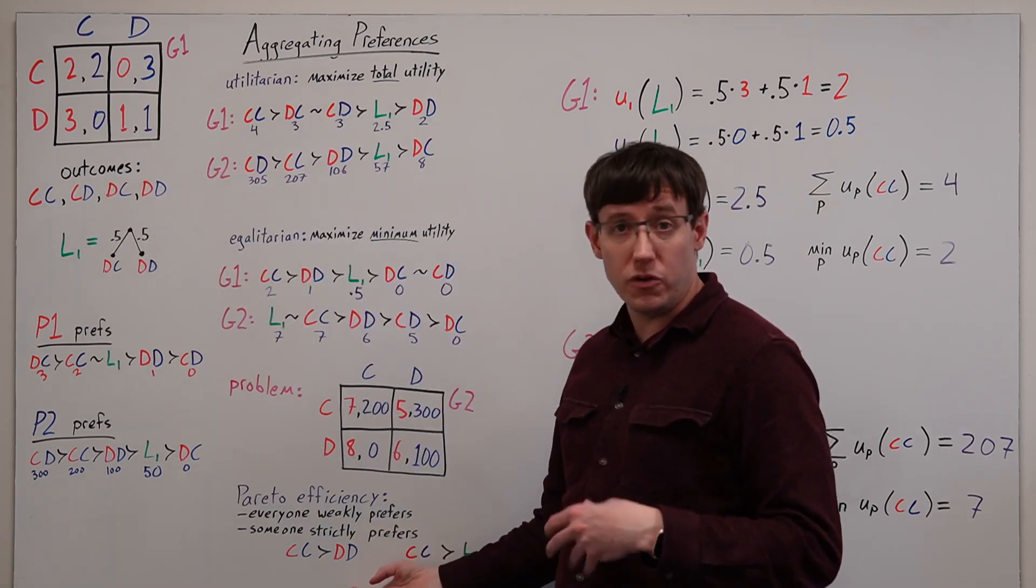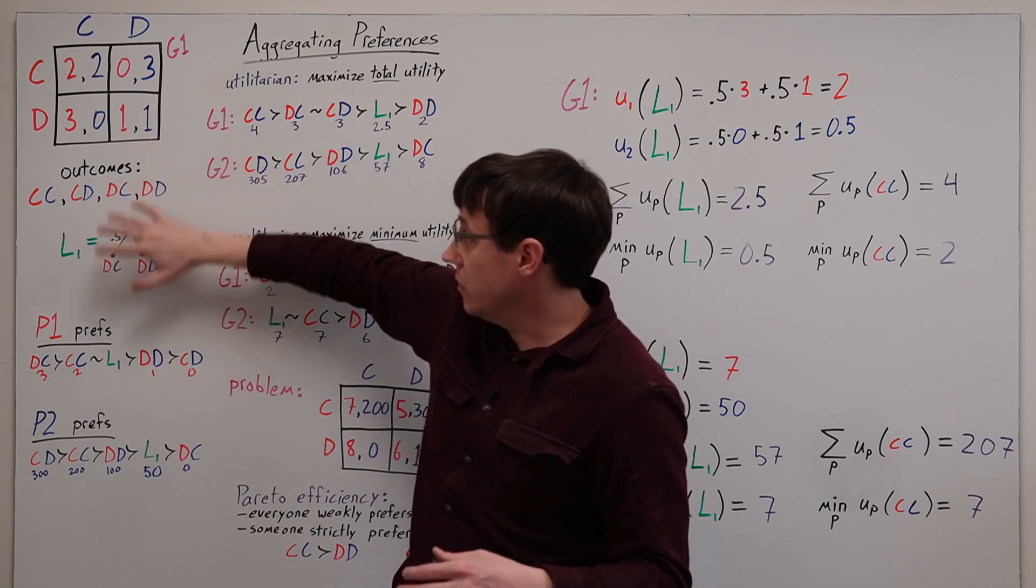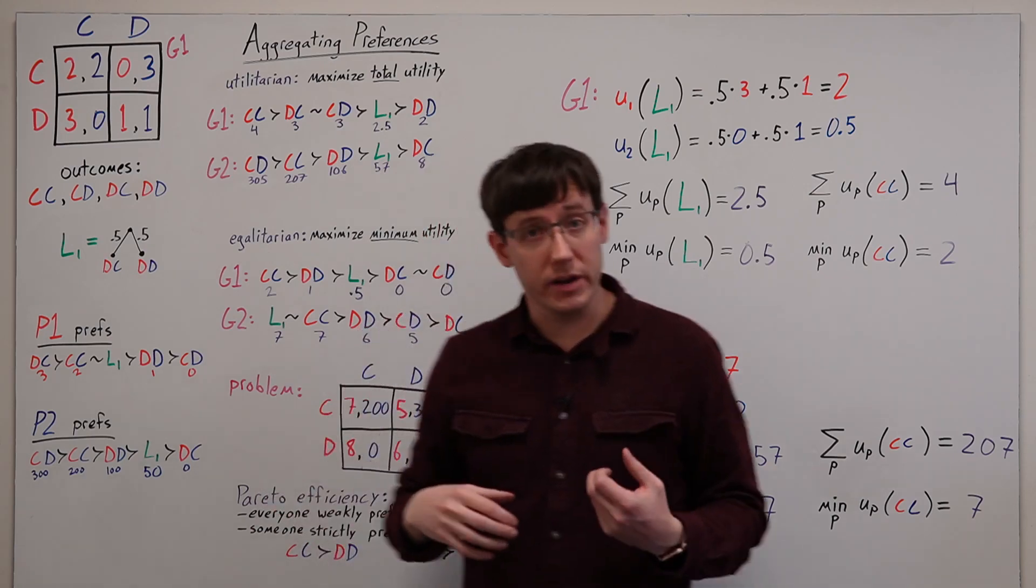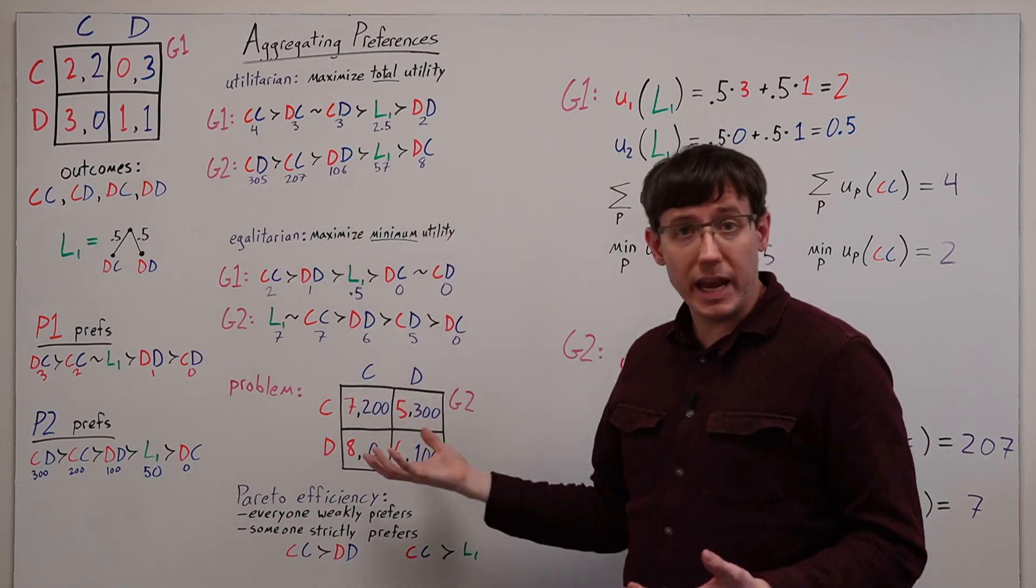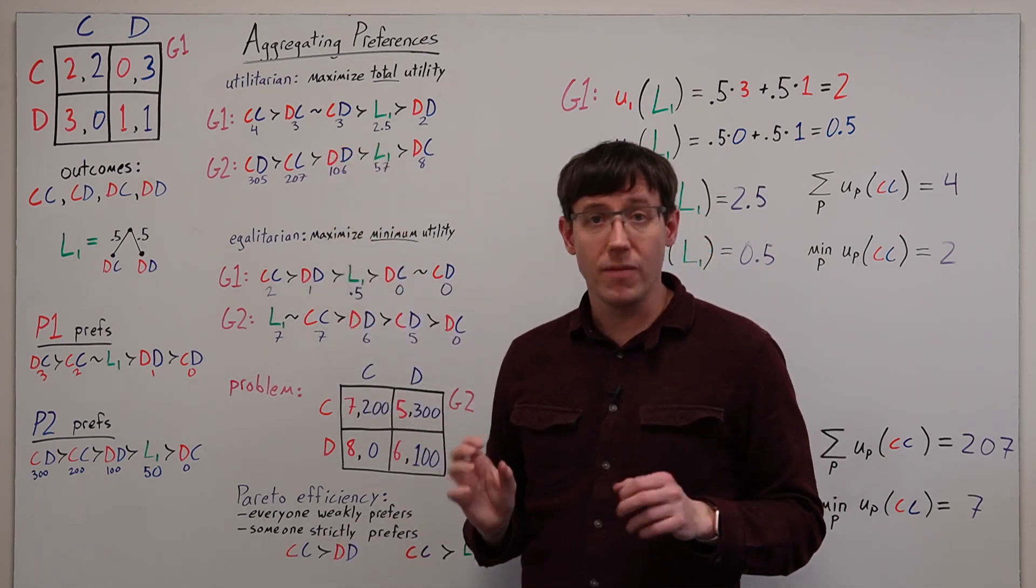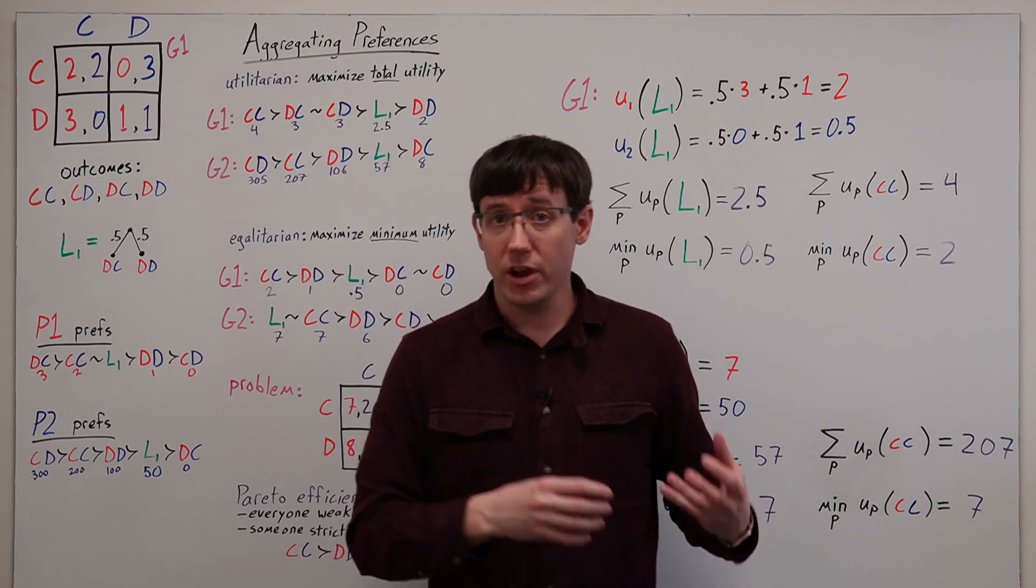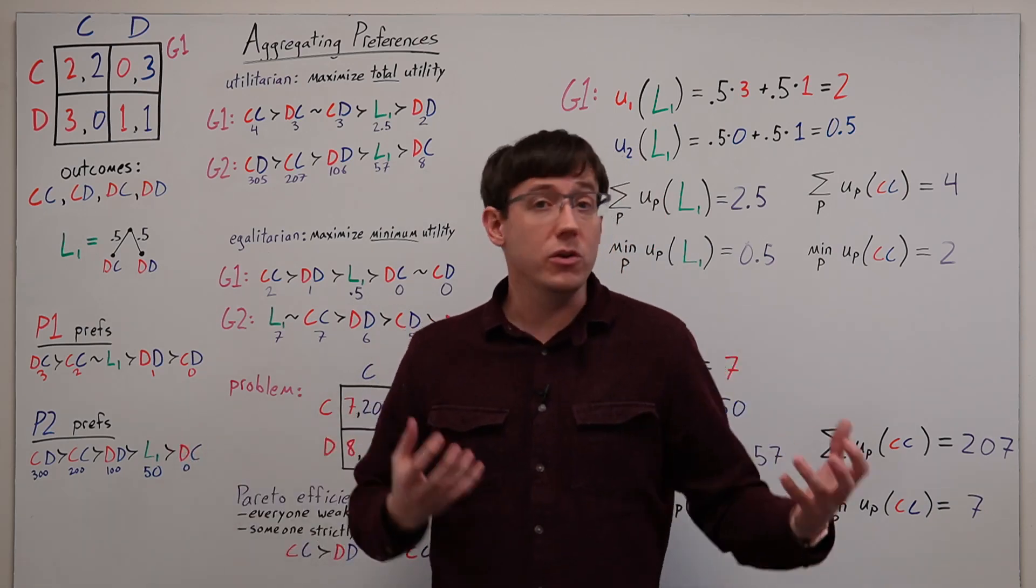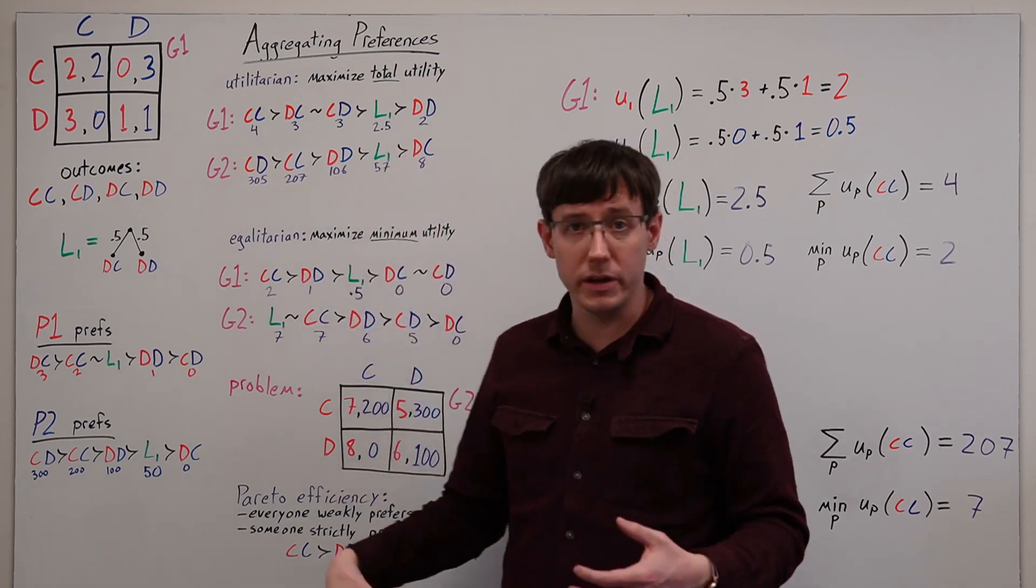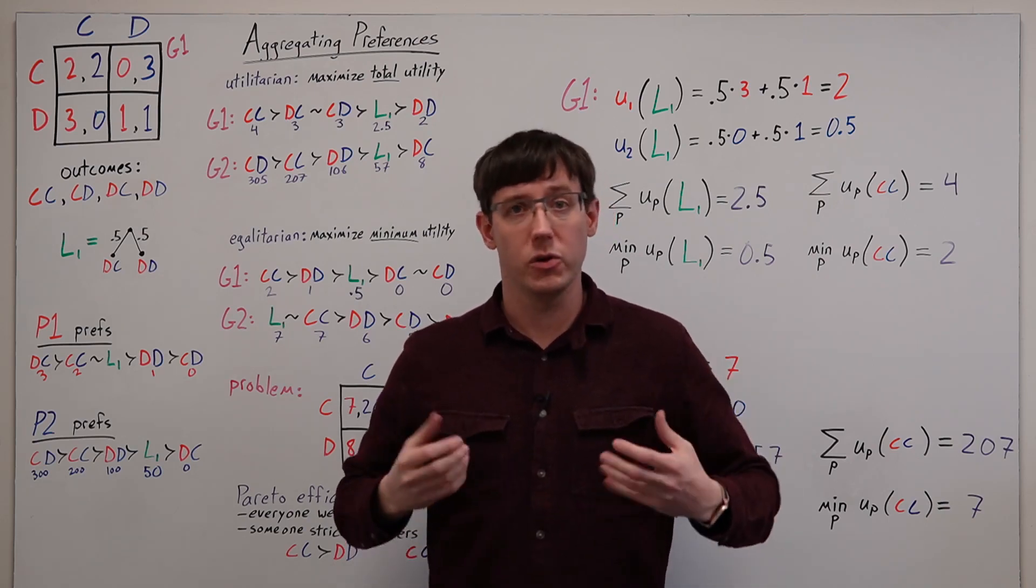So when we use the Pareto efficiency criterion, sometimes we can make a definitive comparison, but it doesn't give us a total ordering because some things just aren't comparable. And so we're left with another unsatisfactory criterion, meaning that if we want to aggregate preferences of multiple players in a game, there are many different possible criteria, all of which have benefits and drawbacks. And so which one we should choose is not in general obvious, and will depend on what we're trying to use that comparison for. And so whenever we're making one of these comparisons that requires us to choose some criterion, we should keep in mind their benefits and drawbacks, and be prepared to justify the approach we've chosen to use.